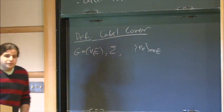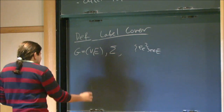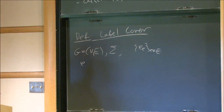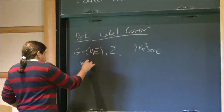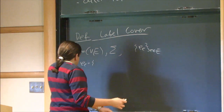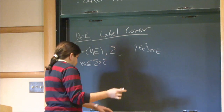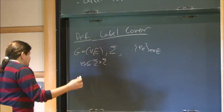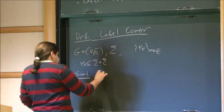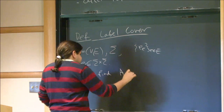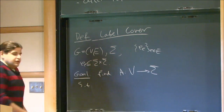Can I assume that the graph is complete? No, let's not do that. Each constraint is simply a collection of pairs that we allow on the endpoints. This is a generalization of coloring. The goal is to find an assignment to the vertices such that as many of the constraints are satisfied.